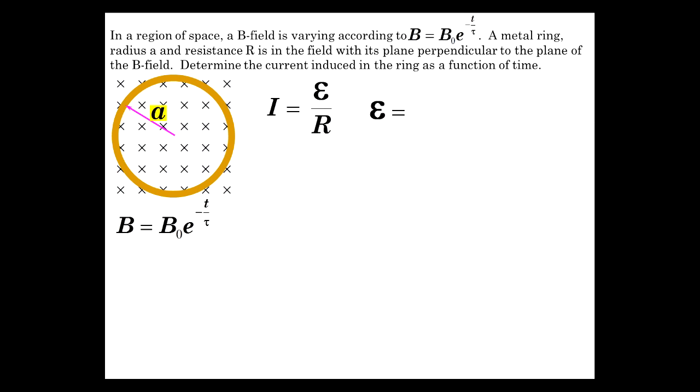Current is emf over R and emf equals minus dΦ_B/dt. So the time derivative of the magnetic flux, which is the time derivative of BA. A is constant.